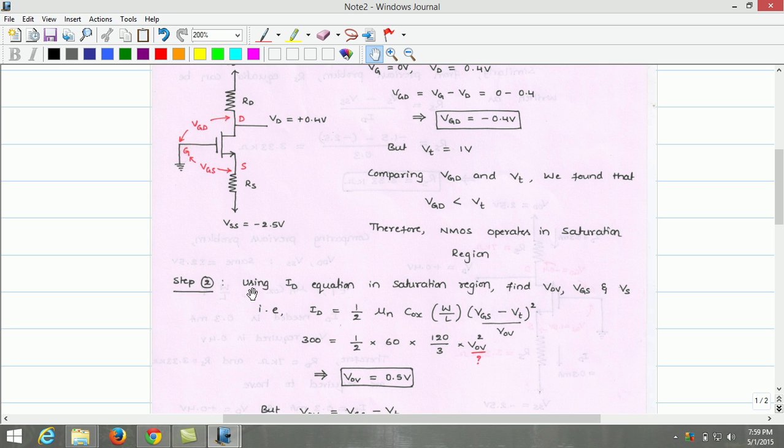In step 2, using the Id equation in saturation region, we can find the overdrive voltage of the MOSFET, gate source voltage, and the source voltage.